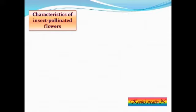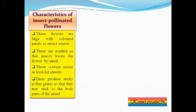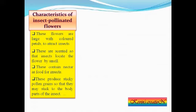The first type is insect-pollinated flowers. They are usually large with colored petals to attract insects — their petals are very beautiful, large, and attractive. These flowers are also scented, and because of their fragrance, insects locate them by smell. They also contain nectar, which is the food for insects, so insects come in search of nectar.